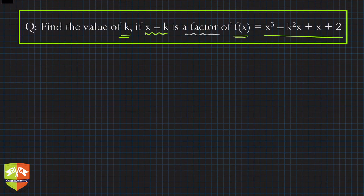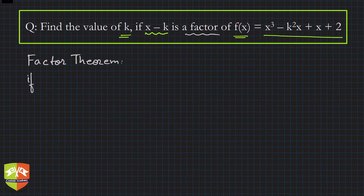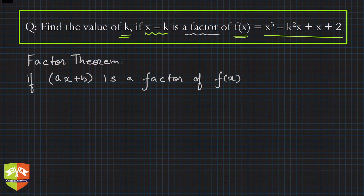Since x minus k is a factor of f(x), we have to use factor theorem. From factor theorem, we can say: if ax plus b is a factor of a polynomial f(x), then f of minus b by a is equal to 0. This is what we have learned.